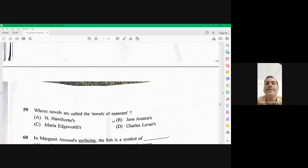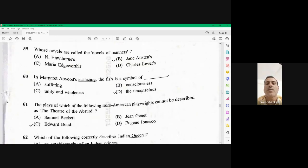Question number 59. Whose novels are called the novels of manners? So all the novels of Jane Austen are known as novel of manners. B is the right option. In Margaret Atwood's surfacing, the fish is a symbol of unity and wholeness here. C is the right option here.